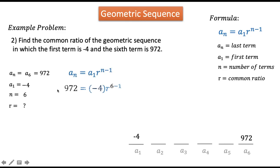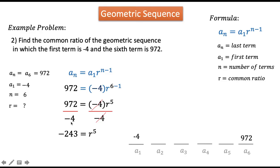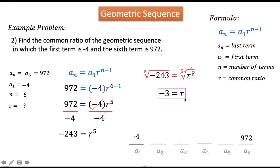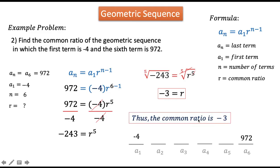We write the formula and substitute the given values, then isolate r. We divide both sides by negative 4, which leaves r raised to the fifth power on the right side. 972 divided by negative 4 is negative 243 on the left side. To solve for r, we take the fifth root of both sides. The fifth root of negative 243 is negative 3, because negative 3 multiplied by itself 5 times equals negative 243. Therefore, the common ratio r is negative 3.